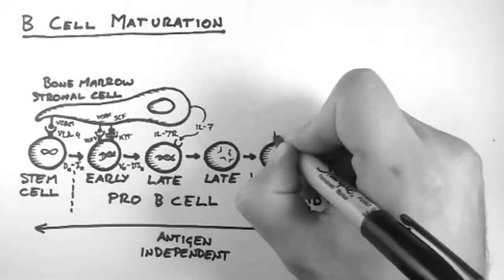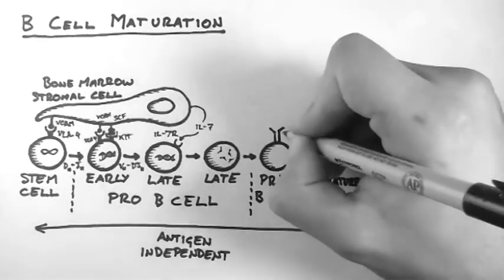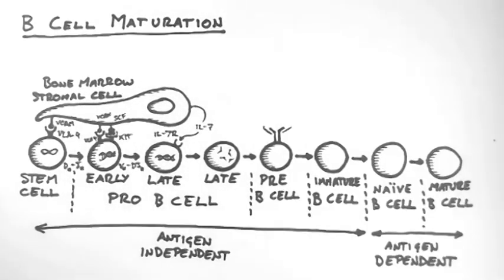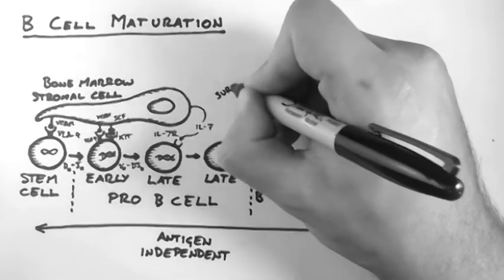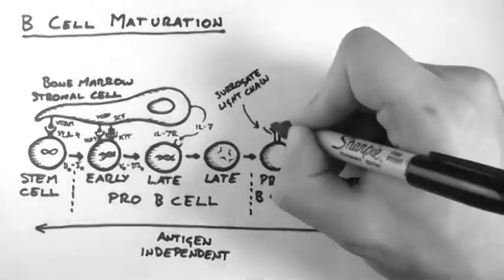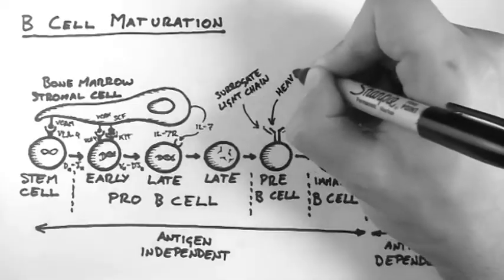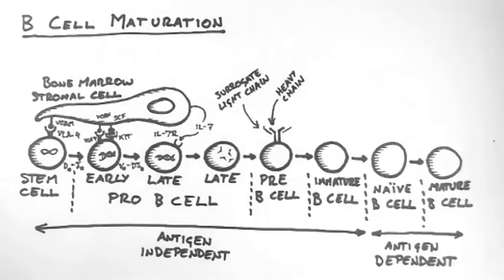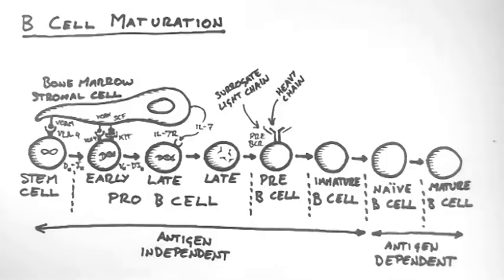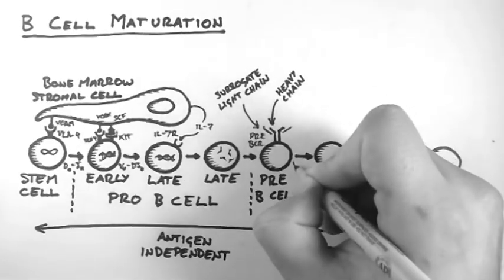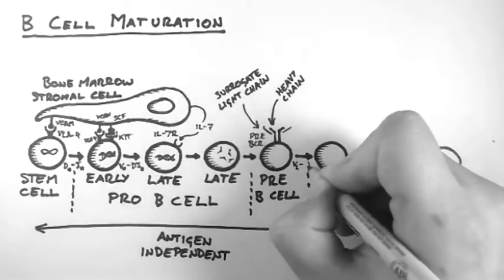The translated heavy chains organize and present on the surface of the cell, along with a protein complex called the surrogate light chain. This is known as the pre-B cell receptor, or the pre-BCR for short. At this point, light chain VJ rearrangement occurs.